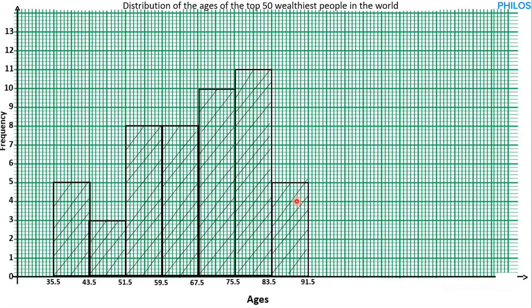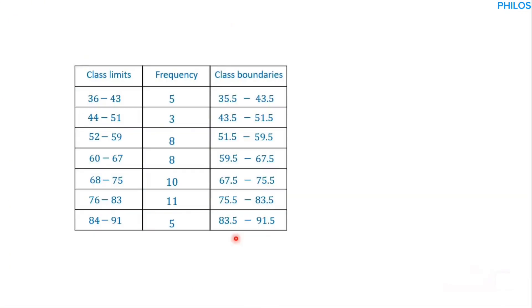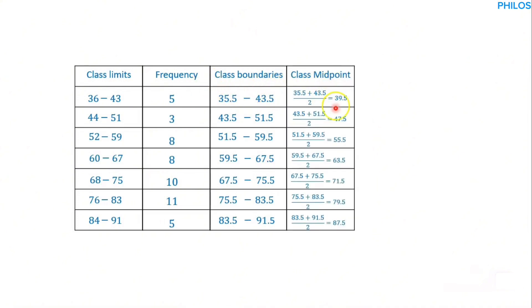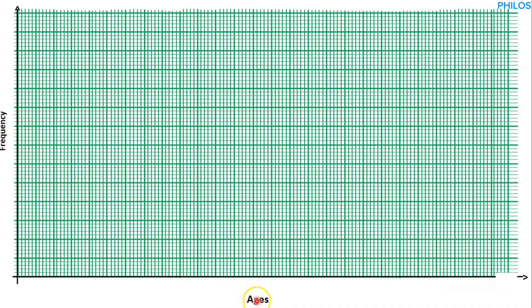Let's take our table back and look at it. To prepare a frequency polygon, we will need two things: the class midpoint and the frequency. For the histogram we used class boundaries and frequency. In the last tutorial I taught you how to find the class midpoint. So for frequency polygon you are going to use class midpoint and frequency. Let's take our graph sheet. Let's draw the x and y axes again. We label the y-axis 'frequency' and the x-axis as the class midpoint. Then let's give it a title.